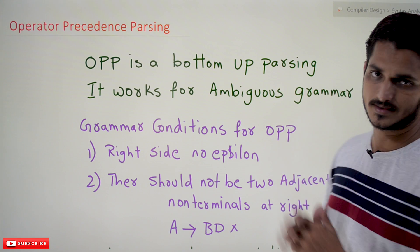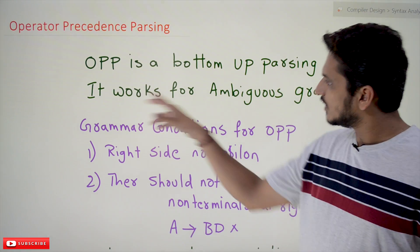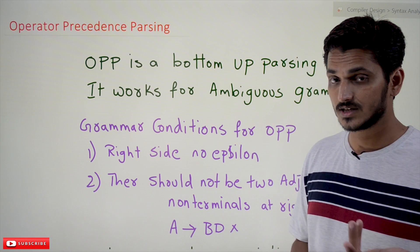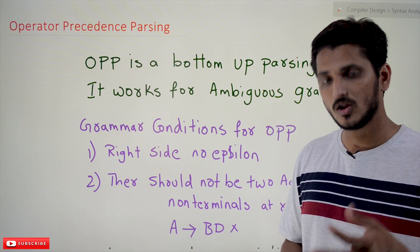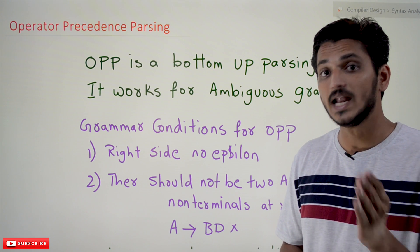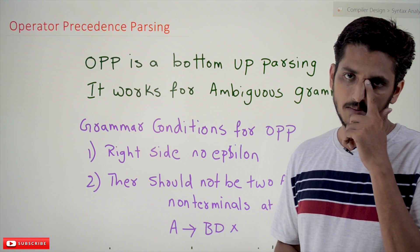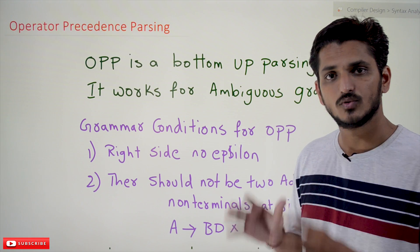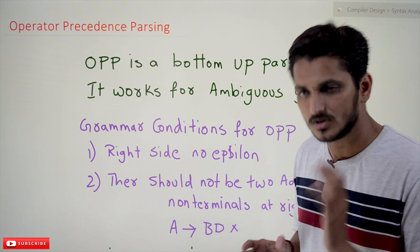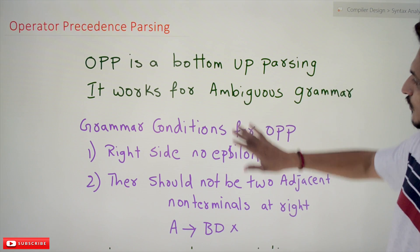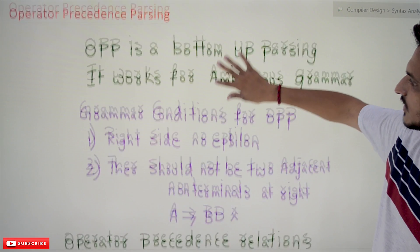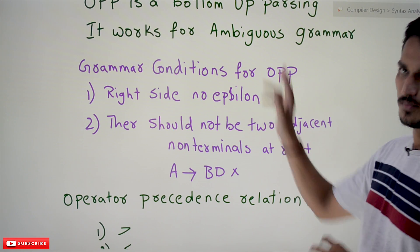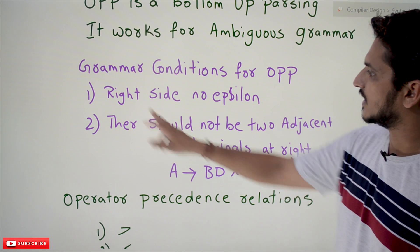Operator precedence parsing is a bottom-up parsing technique. It works for ambiguous grammar also. In our last classes when we discussed about LL(1) and LR(1), all those techniques work only for unambiguous grammars. But operator precedence parsing works for ambiguous grammars, but we should have some conditions for it.